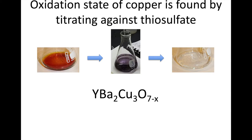In essence, what we're finding is the oxidation state of copper. Copper in the YBCO structure had multiple sites — in the planes or in those ribbons — and copper can have different valence or oxidation states, whereas yttrium and barium are fixed oxidation states and don't vary. The oxidation state of oxygen also doesn't vary. So really, the only thing that changes is copper. We use this technique to figure out the oxidation state of copper, and then the only other thing that can vary in the structure is the oxygen content, the 7 minus x or delta.